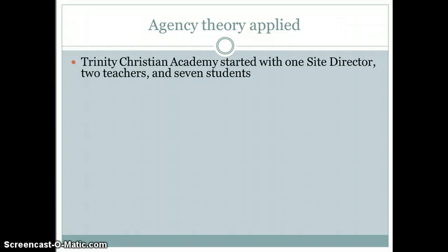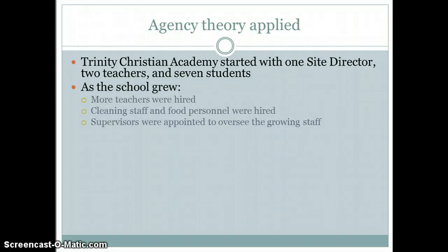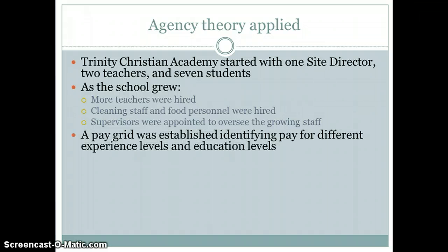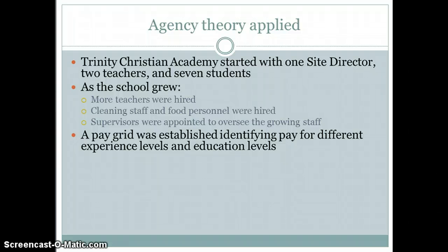Agency theory applied: at Trinity Christian Academy, we started with one site director, two teachers, and seven students — a small organization. As the school grew, more teachers were hired, cleaning staff and food personnel were hired, supervisors were appointed to oversee the growing staff, and a pay grid was established identifying pay for different experience and education levels. We had to hire supervisors to watch the teachers to make sure they were clocking in and out properly and doing the work expected, which included cleaning and other activities besides just watching the children.